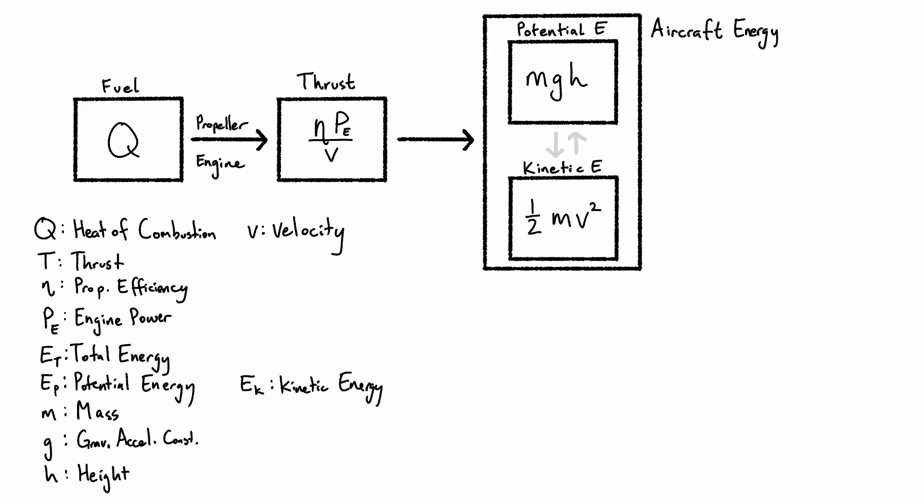Once you have either kinetic or potential energy, they can be interchanged with each other based on how your aircraft is maneuvering. You can turn kinetic energy into potential energy by using your speed to climb and decelerate, and you can turn your potential energy into kinetic energy by diving and accelerating.